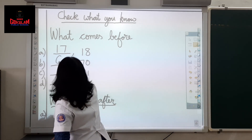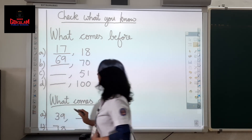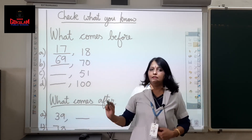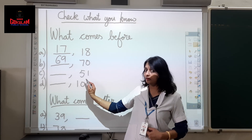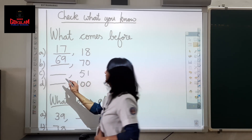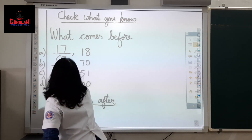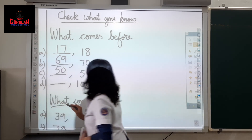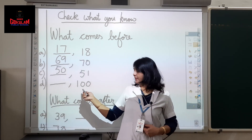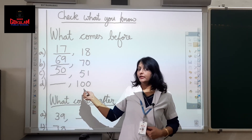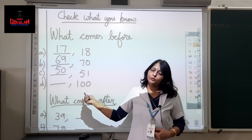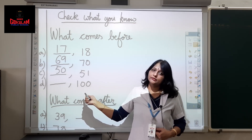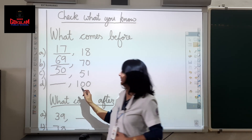What number comes before 51? Yes, 50 — 5 and 0. Now what is this number? 100. What comes just before 100? Yes, 99.